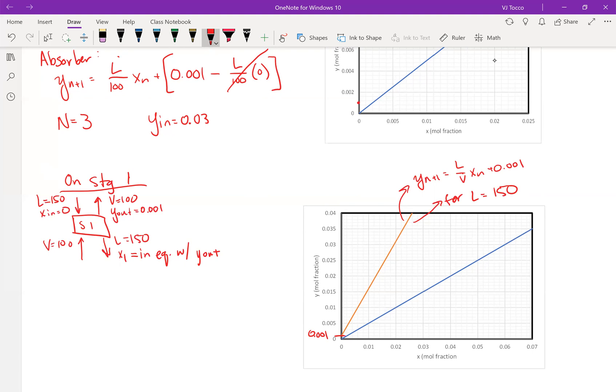So to solve equation graphically, find the point on the equilibrium curve where y_out is equal to 0.001. That's going to occur right here.